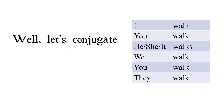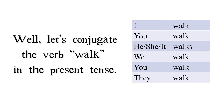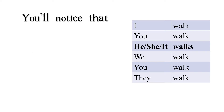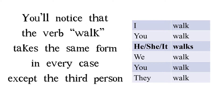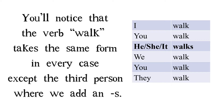Well, let's conjugate the verb 'walk' in the present tense. I walk, you walk, he, she, it walks, we walk, you walk, they walk. You'll notice that the verb 'walk' takes the same form in every case except the third person, where we add an S.